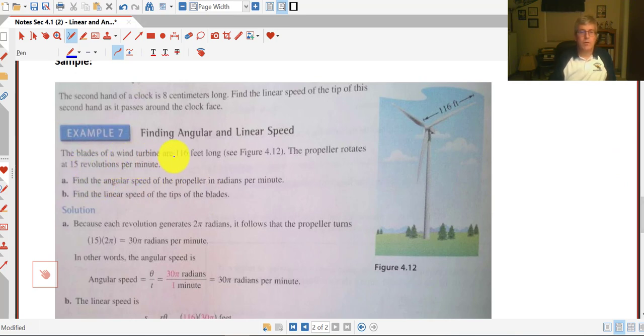The blades of a wind turbine are 116 feet long. You might see some of these as you're driving up near Fond du Lac and Lake Winnebago. There's wind farms up there. The propeller rotates at 15 revolutions per minute. So a full revolution is 2 pi. In one minute, there's 15 2 pi's taking place.